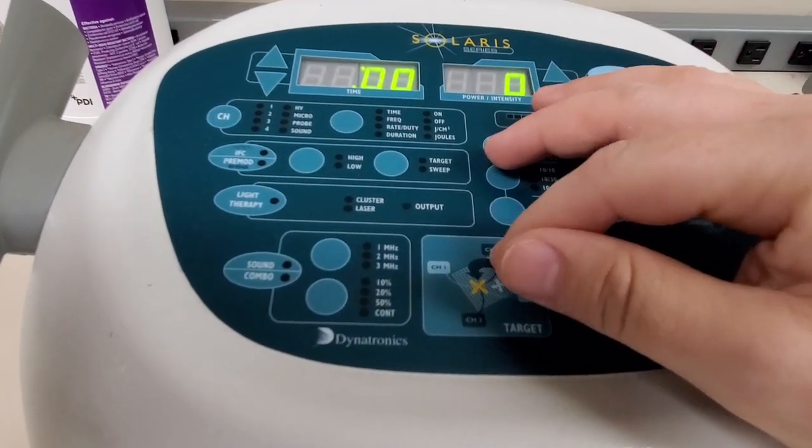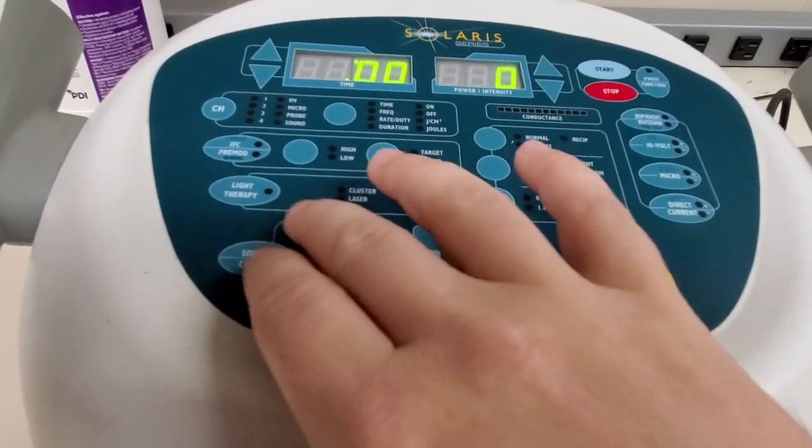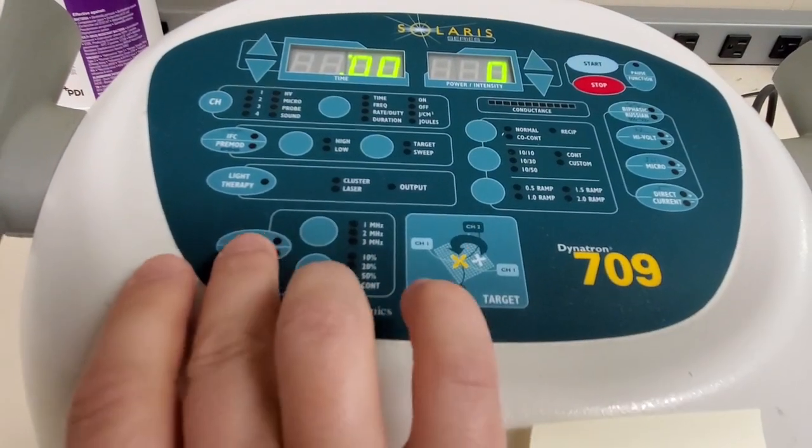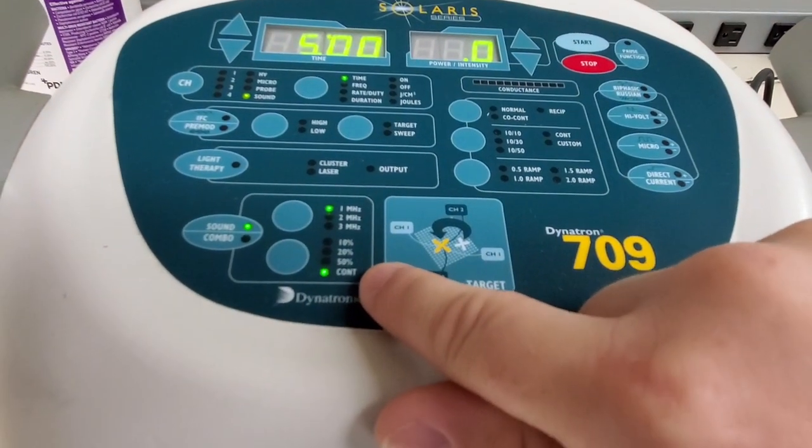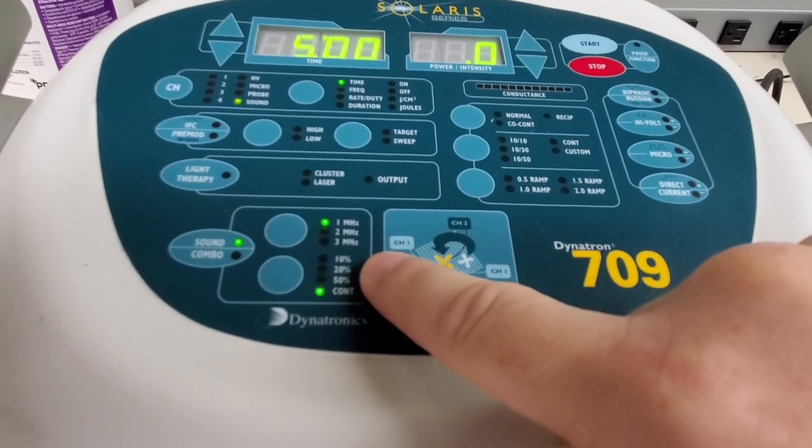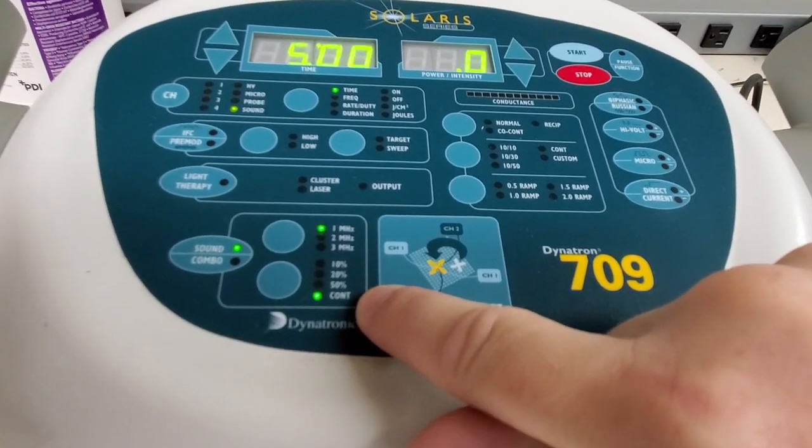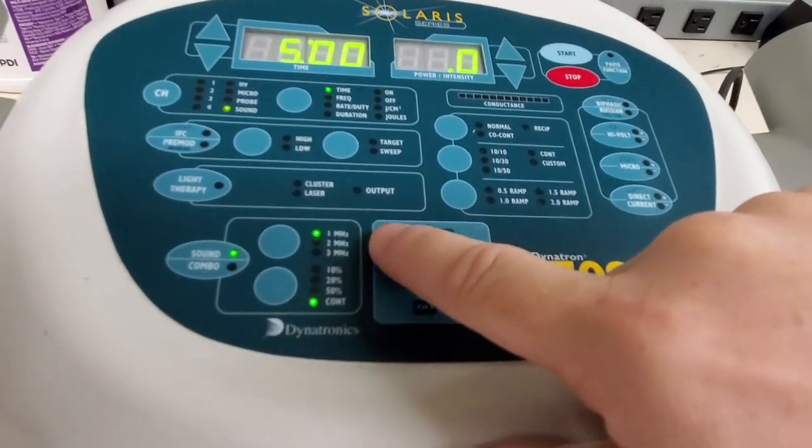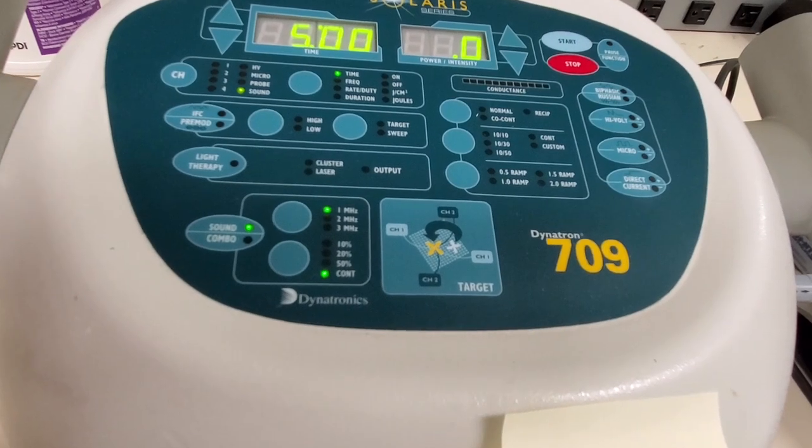Despite all these buttons up here on this particular unit, it's got various other functions like stem capabilities for muscle stimulation and a few other things. But all that we're concerned about is this area down here for ultrasound. Now you can see this is duty cycle - 10%, 20%, 50%, and continuous duty which means it's always on. And then you can see up here it says 1 megahertz, 2 megahertz, and 3 megahertz.